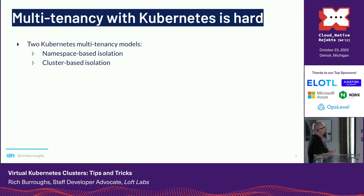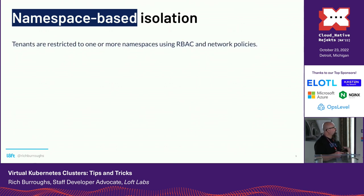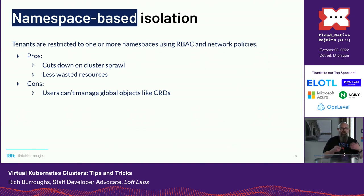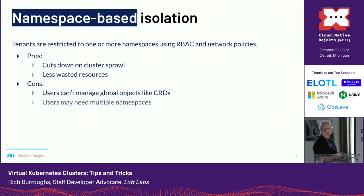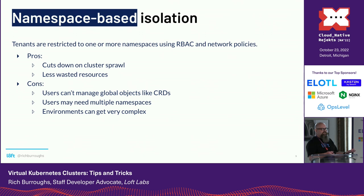Multi-tenancy for Kubernetes is hard. In the past, there have mainly been two multi-tenancy models: namespace-based isolation and cluster-based isolation. With namespace-based isolation, tenants are restricted to one or more namespaces using tools like RBAC and network policies. Some pros: it cuts down on cluster sprawl and there's less wasted resources. Some cons: users can't manage global objects like CRDs. And if it's a dev environment on a shared cluster, they're going to want to do things like that, or run multiple microservices in different namespaces that need to talk to each other — and then you start making exceptions in your network policies. These environments can get very complex.